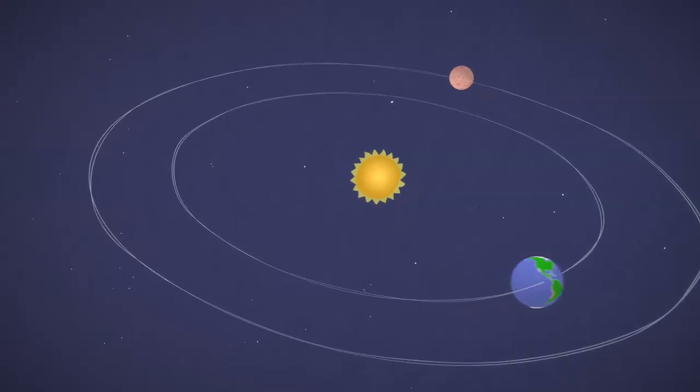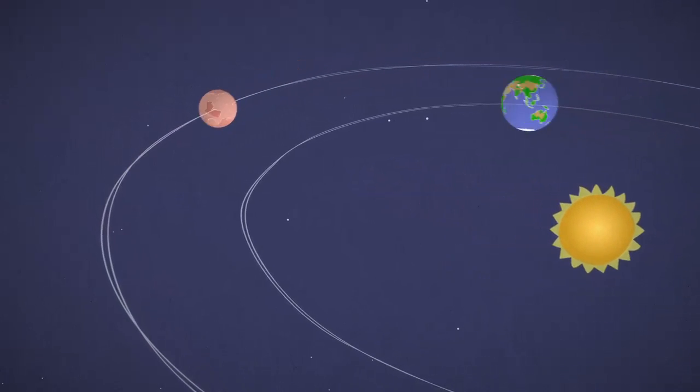About every two years, the two planets are in perfect positions to get to Mars with the least amount of rocket fuel. That's important. The total trip is over 300 million miles.